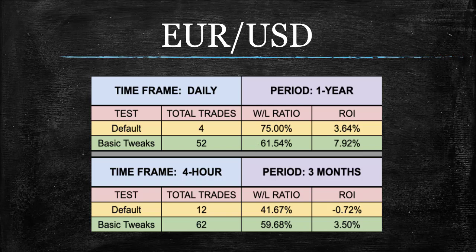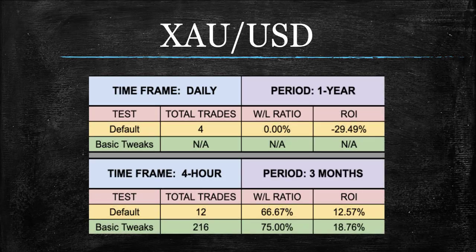What is not quite solid and what is all over the place is gold. Sorry gold traders — we have nothing for you on the daily. We couldn't even get the tweaks to get us over the zero mark. But I want to draw your attention down here on the 4-hour, and we're going to talk for a minute. So, a good ROI, a ton of trades, really nice win-loss ratio. What do we do with this information?